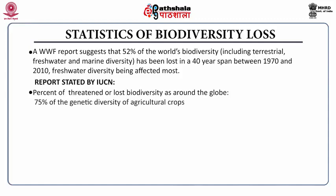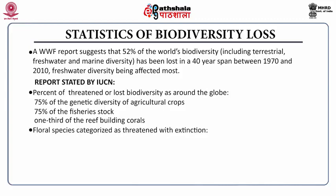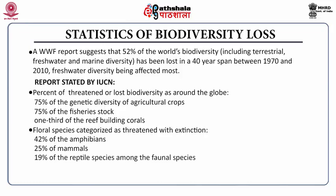According to IUCN reports: 75% of genetic diversity of agriculture crops is lost, 75% of fisheries stock is lost, one third of reef-building corals are lost, about 50% of amphibians are lost, 25% of mammals, 19% of reptiles among faunal species are lost. Among floral species, 71% of Mongolian, 63% of Cicads and 34% of conifers are lost.